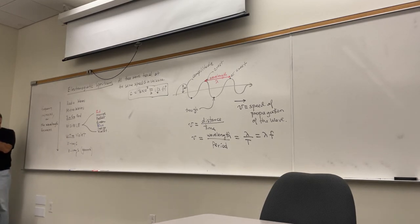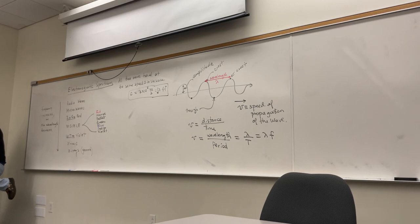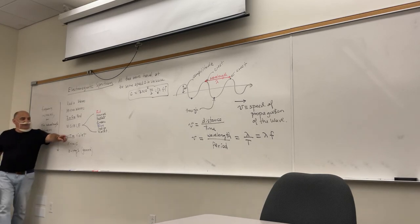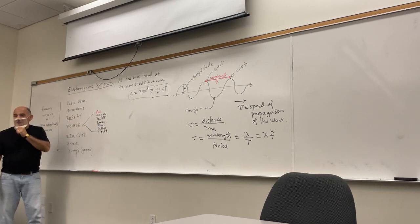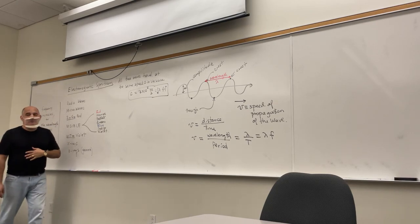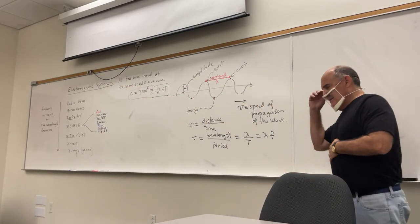In the visible spectrum, red has the longest wavelength and lowest frequency; violet has the shortest wavelength and highest frequency. For example, blue has a shorter wavelength and higher frequency than green.